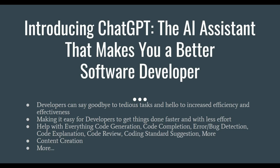I am going to talk about the AI assistant that makes you a better software developer and better software development revolution in this new coming era. I will talk about the new AI revolution called ChatGPT and how you can elevate your software development by using this advanced AI tool developed by OpenAI, based on natural language processing GPT-3.5.